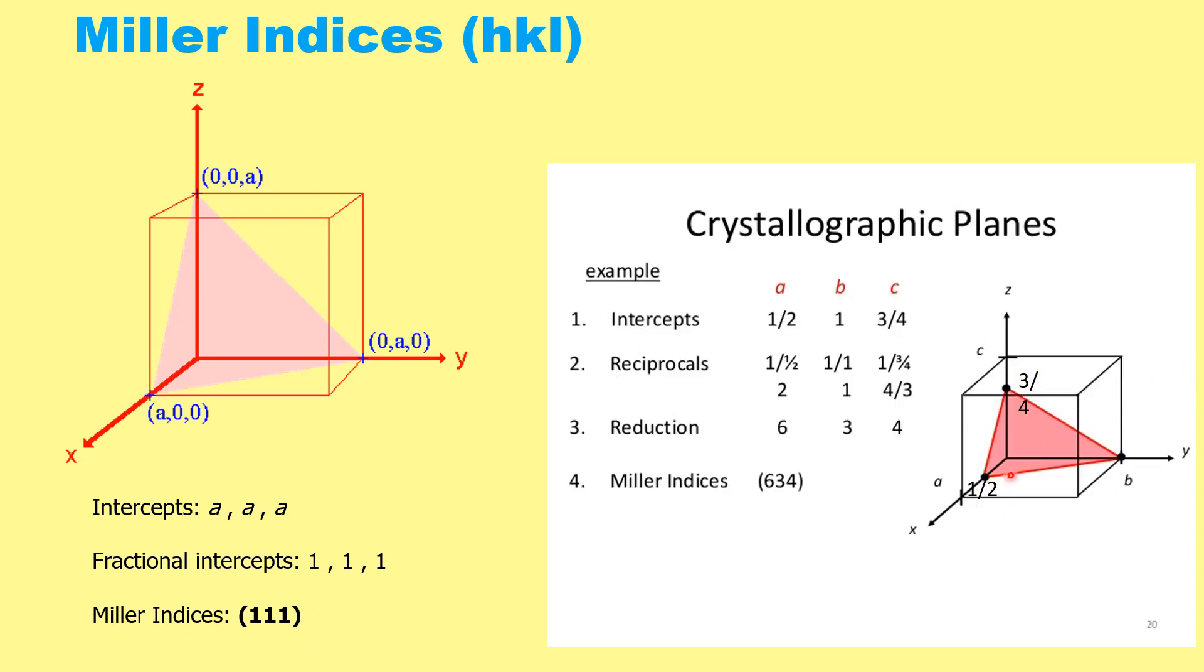In one example, if the intercept on the x-axis is 1/2, on the y-axis it is 1, and on the z-axis it is 3/4, if we take the reciprocal, we will have 2, 1, and 4/3.